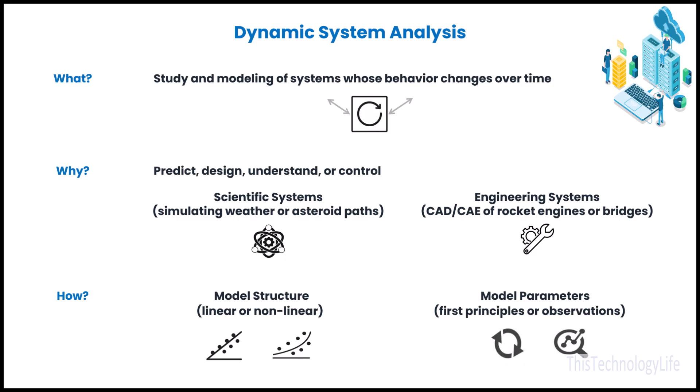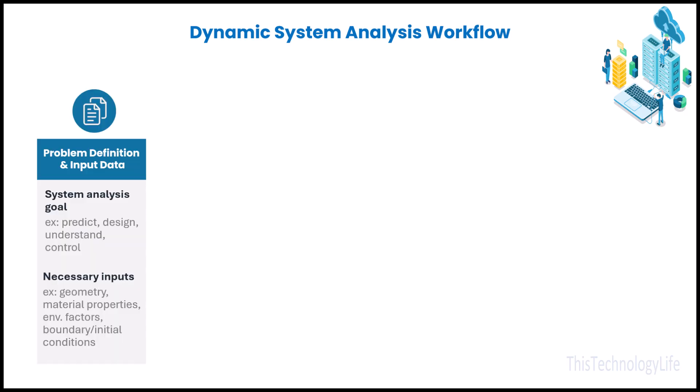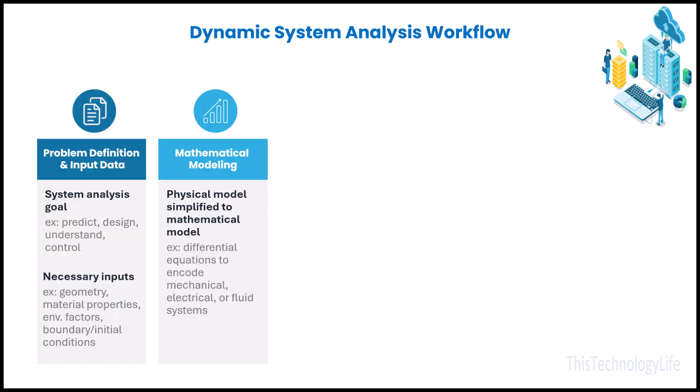The model parameters are determined by physical laws or by observing system data. The five stages in a dynamic system analysis workflow start with determining the inputs necessary for system analysis and creating a mathematical model as a simplified representation of a physical system, typically using differential equations to linearize and encode the rate of change in mechanical, electrical, or fluid systems, in time or space as governed by forces, flows, and conservation principles.